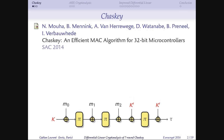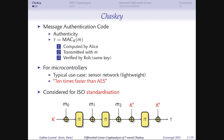First of all, what is Chaskey? Chaskey is a MAC algorithm that was designed by Moua et al. and presented at SAC 2014. A MAC algorithm is something you use to provide authenticity of messages. It's used when you don't want to encrypt your message but you want to make sure they're authentic. It can also be combined with encryption to build authenticated encryption, and then you get all security features.